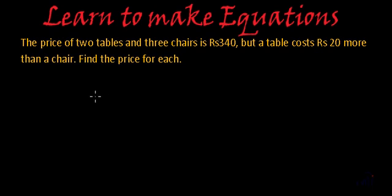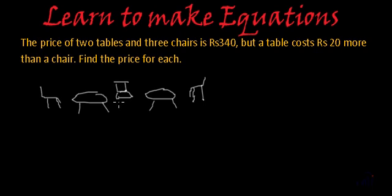So what we have? Here we have two tables and we have three chairs. The relation between their cost is a table cost rupees 20 more than a chair. So if the cost of the chair is x, the cost of the table is x plus 20.